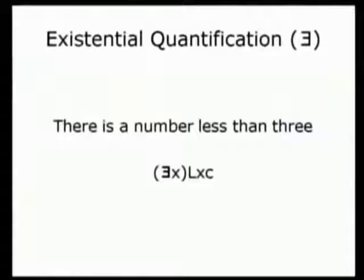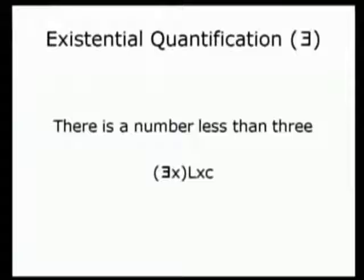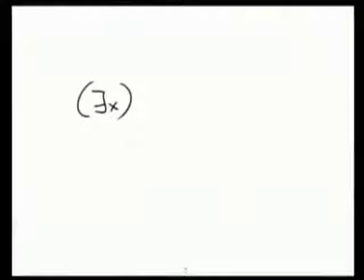This is going to allow us to introduce the existential quantifier first, written as a backwards capital E. It's not going to stand alone — it's always written with a variable. To say 'there is a number less than 3,' we say 'there exists an X such that X is less than C,' which is our name for the number 3. The lowercase letters above V will be used as variables, and the lowercase letters prior to V will be used as names.